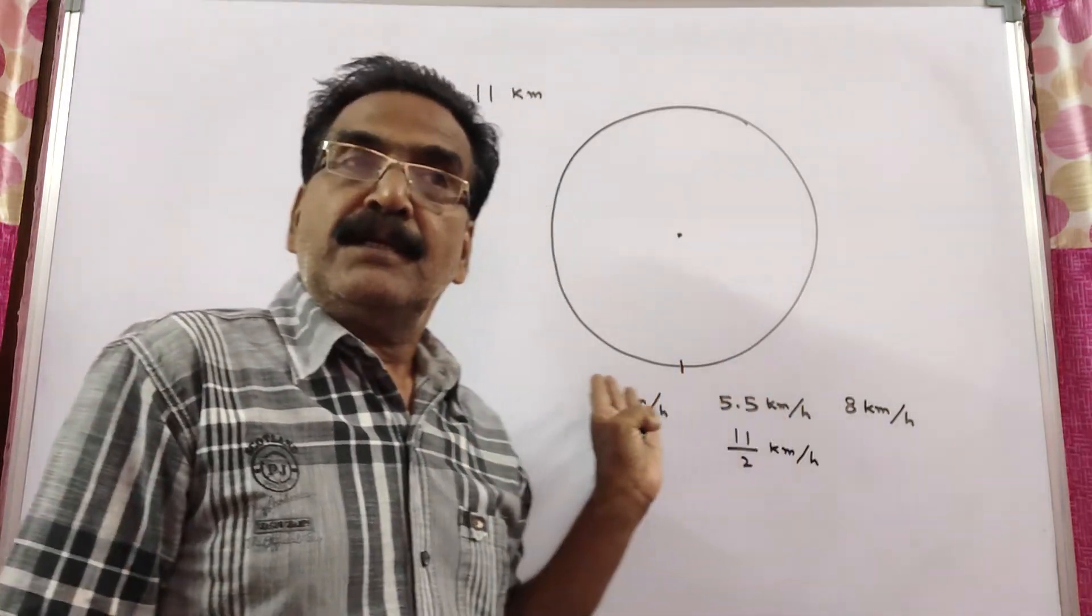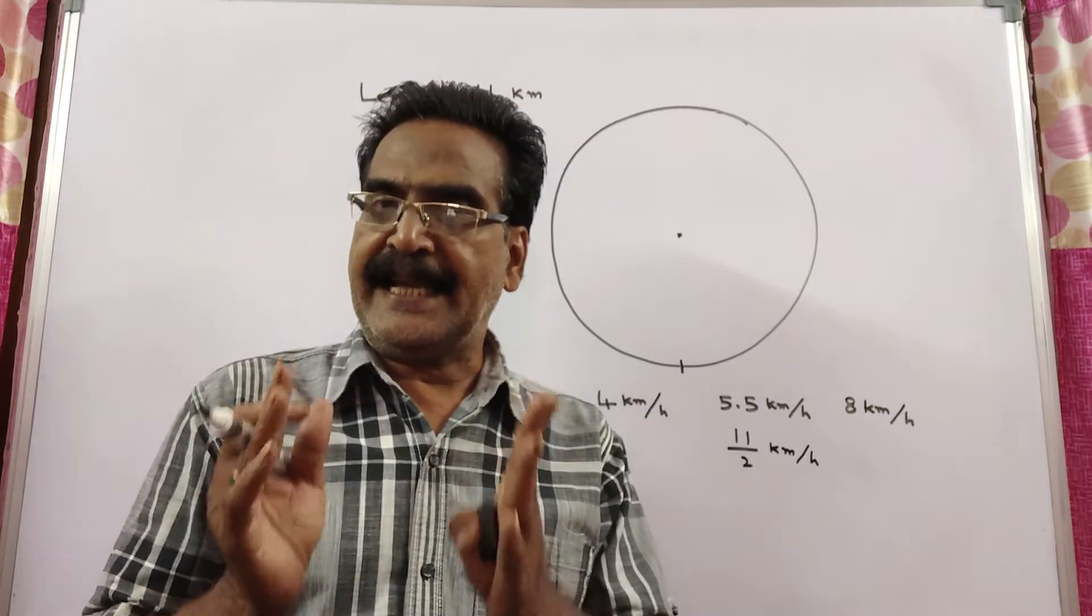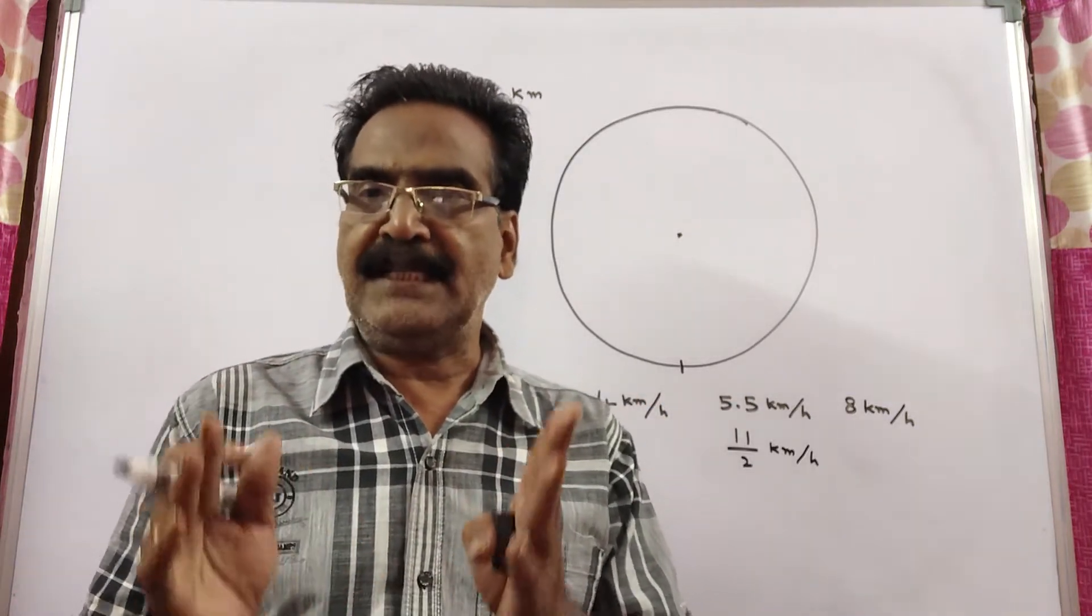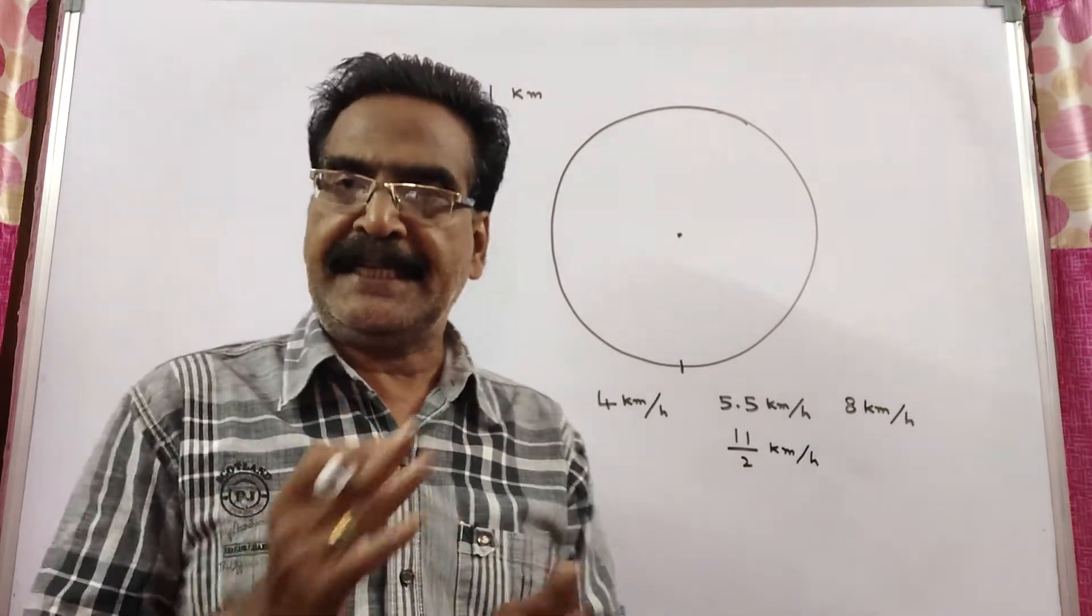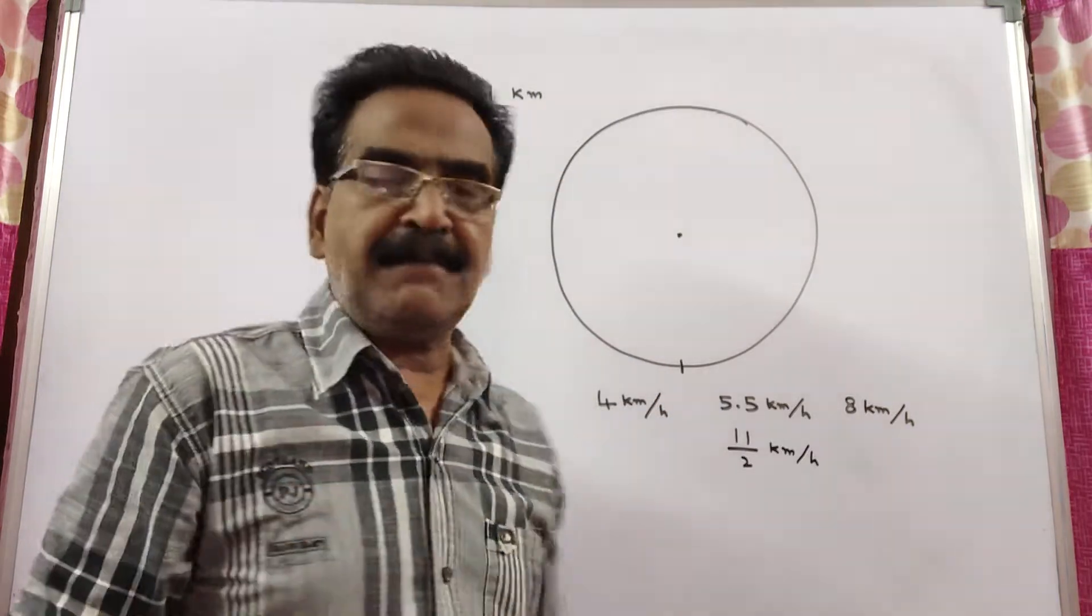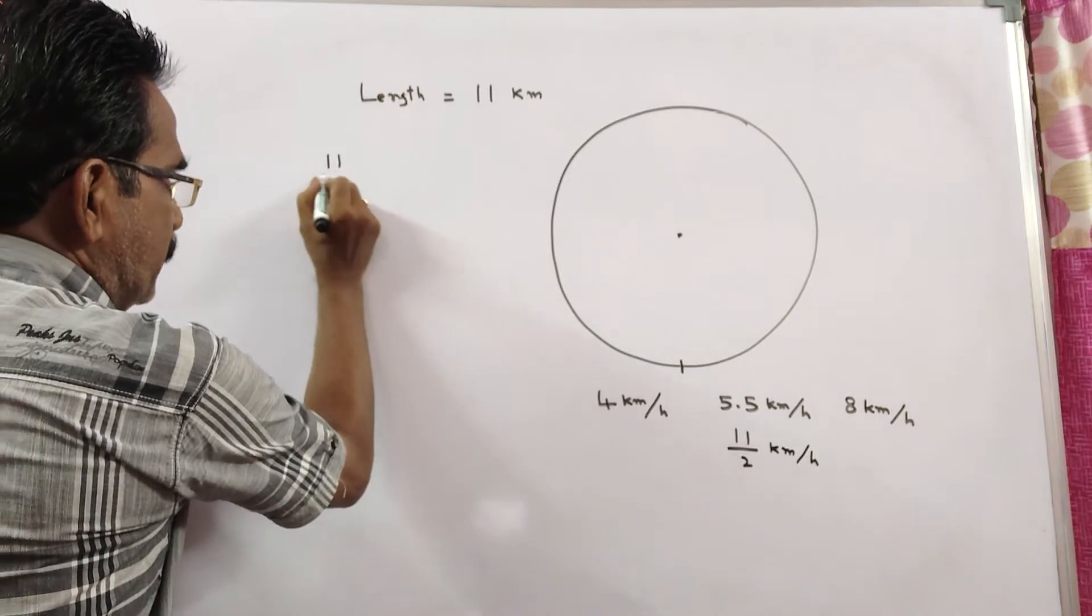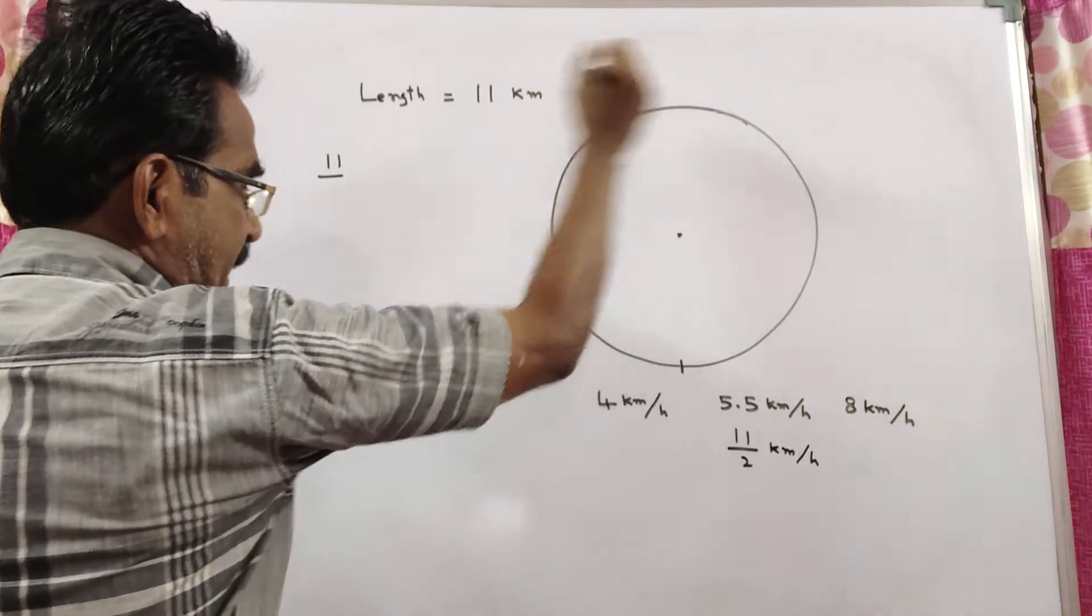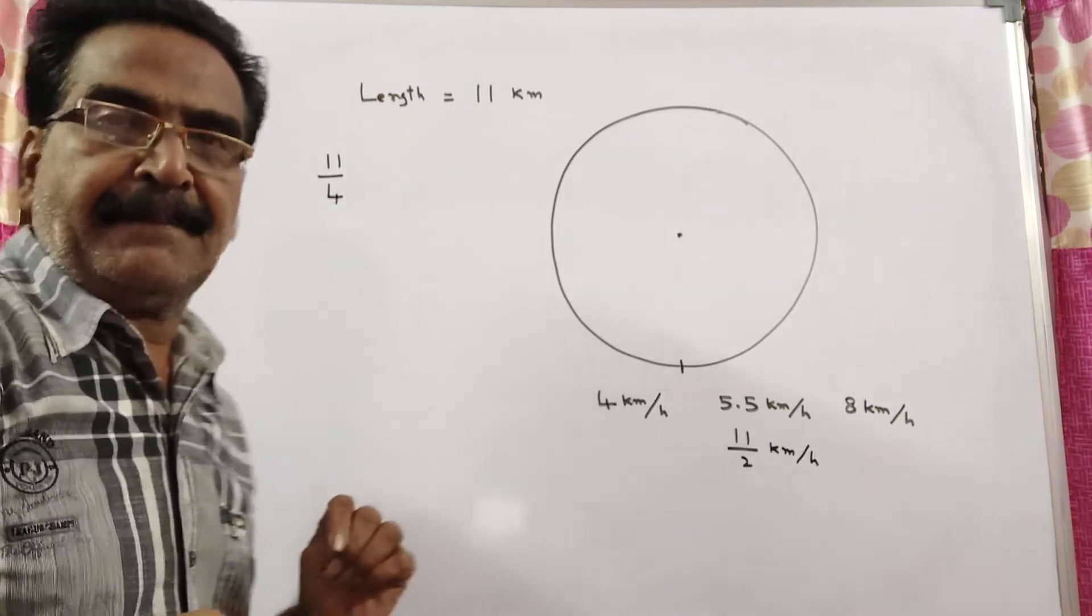To find this, we have to find the LCM of the times they take to run around the track. Time equals distance by velocity. So the first man's time is 11/4 hours.